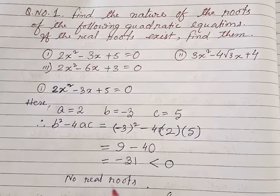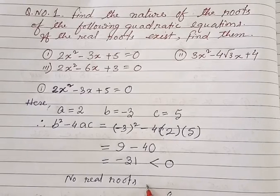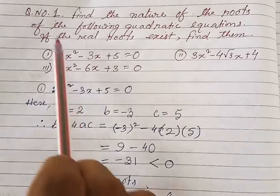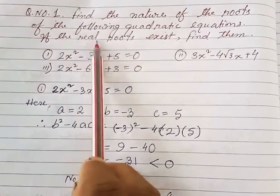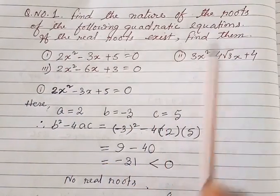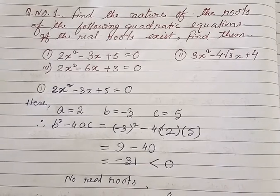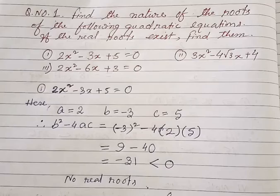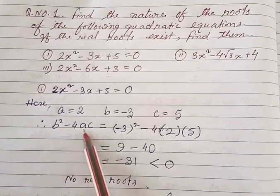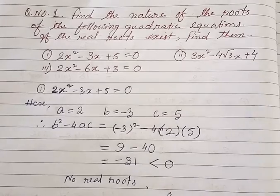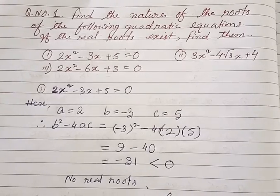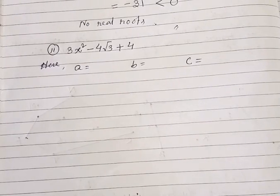There will be no real roots, so you need not find the roots. The question says 'if the real roots exist, find them' — they do not exist here. Because b² - 4ac is less than 0, there are no real roots for this equation.